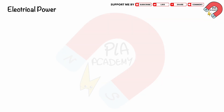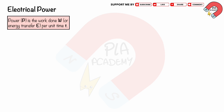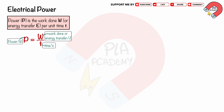Electrical power. The electrical power P is the work done W, or energy transfer E, per unit time T. We can write the equation as P equals W divided by T, where P is the electrical power in watts, W is the work done or energy transferred in joules, and T is the time in seconds. One watt is equivalent to one joule per second.